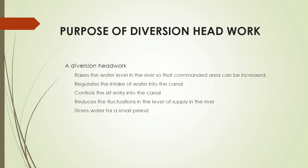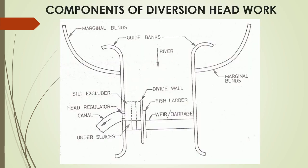A diversion headwork can perform the following functions: it raises the water level in the river so that the commanded area can be increased; it regulates the intake of water into the canal; it controls the silt entry into the canal; it reduces the fluctuations in the level of supply in the river; and it stores water for a small period. The components of a typical diversion headwork include: weir or barrage, fish ladder, divide wall, under sluices, head regulator, silt excluder, guide banks, and marginal bunds.